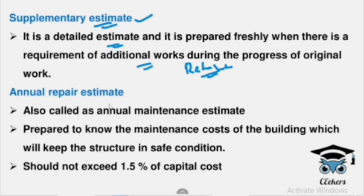It is not a maintenance or painting estimate. We prepare the Annual Repair Estimate to maintain our structure in safe condition. This is a maintenance cycle. The estimate is the Annual Repair Estimate, and it should not exceed 1.5% of the total capital cost.